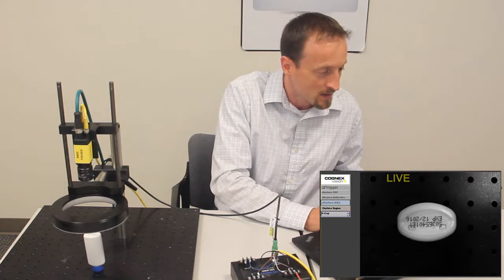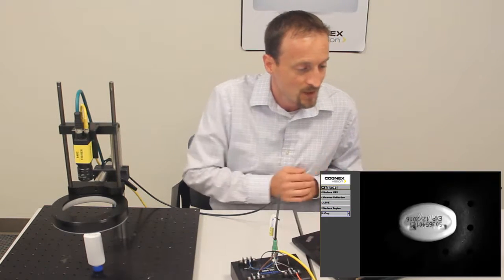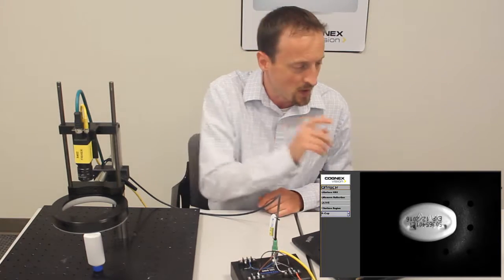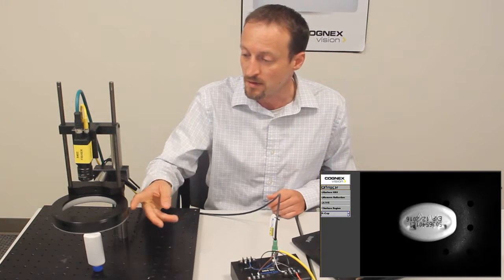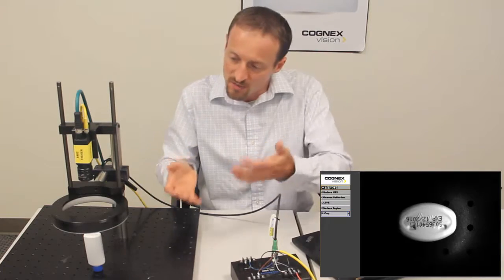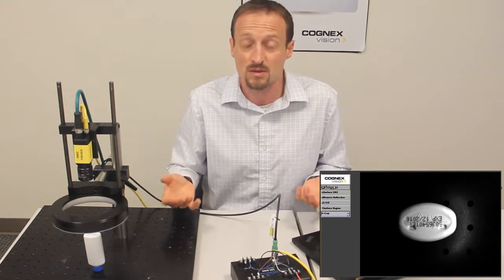Let's go ahead and take an image and see what Surface Max sees. Now you saw when I pressed the trigger button, the ring light here was strobed four times from four different banks. That's the Surface Max algorithm.